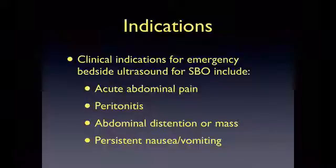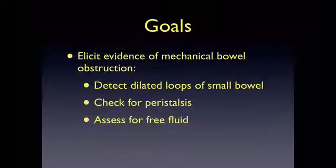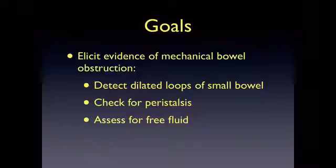The main indications for emergency bedside ultrasound looking for SBO include acute abdominal pain, peritonitis, abdominal distention or mass, and persistent nausea or vomiting. The goals of ultrasound for SBO are to evaluate for signs of mechanical bowel obstruction by looking for dilated loops of bowel, checking for peristalsis, and assessing for free fluid.